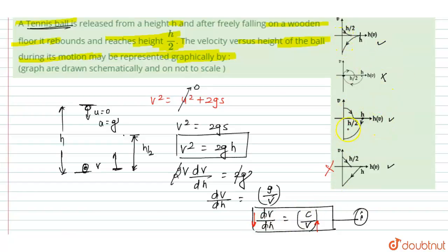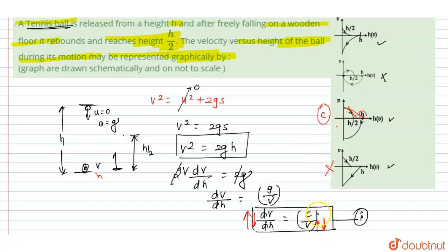We now have only two remaining possibilities. From dv/dh = c/v, when velocity increases, the slope decreases, and when velocity decreases, the slope increases — this is the inverse relationship. Checking the remaining options, option C satisfies all conditions: when h = 0, there is a nonzero velocity, and as velocity increases the slope decreases while as velocity decreases the slope increases. Therefore, option C is the correct answer.